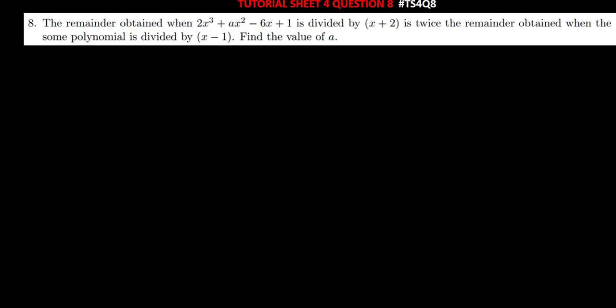Hi everyone, welcome to today's tutorial video. I'm going to be solving question 8 from tutorial sheet 4. Question 8 says: the remainder obtained when 2x cubed plus ax squared minus 6x plus 1 is divided by x plus 2 is twice the remainder obtained when the same polynomial is divided by x minus 1.